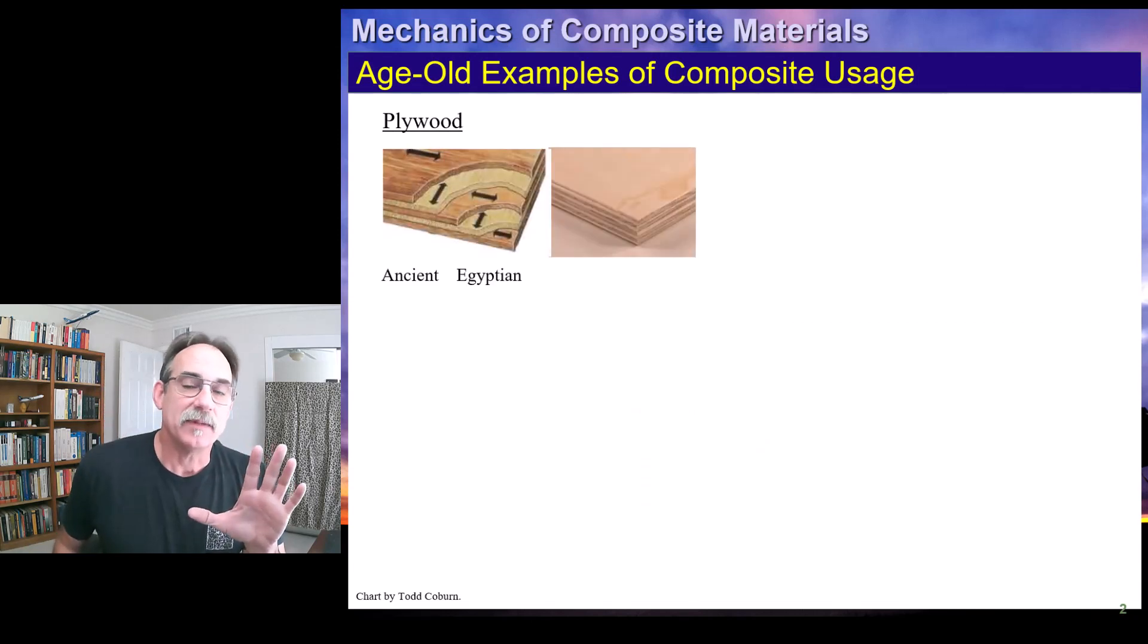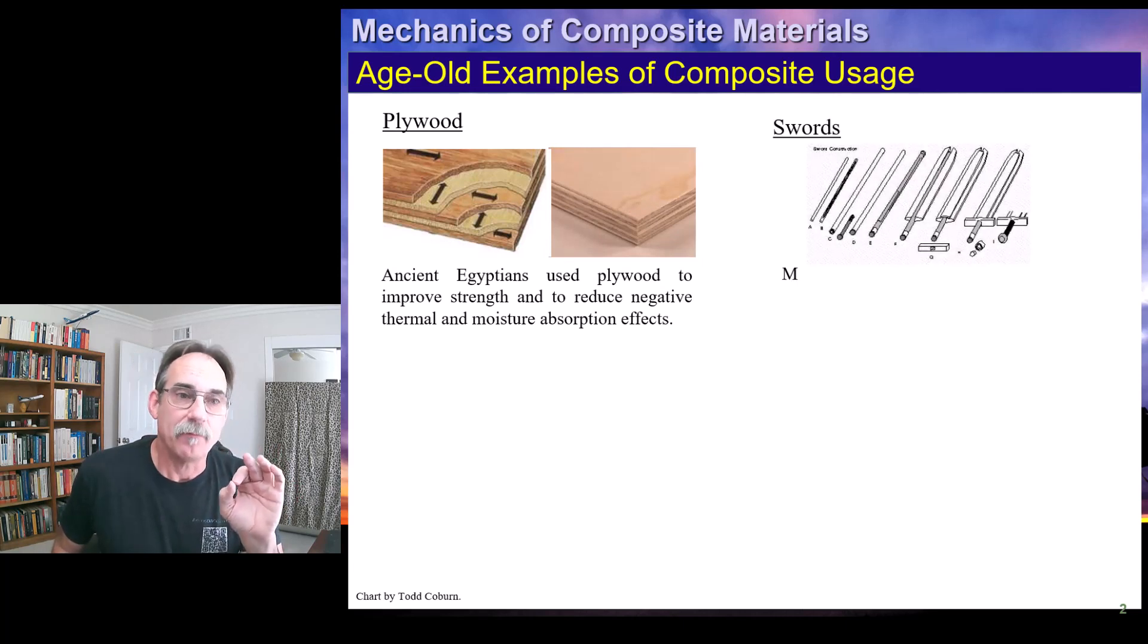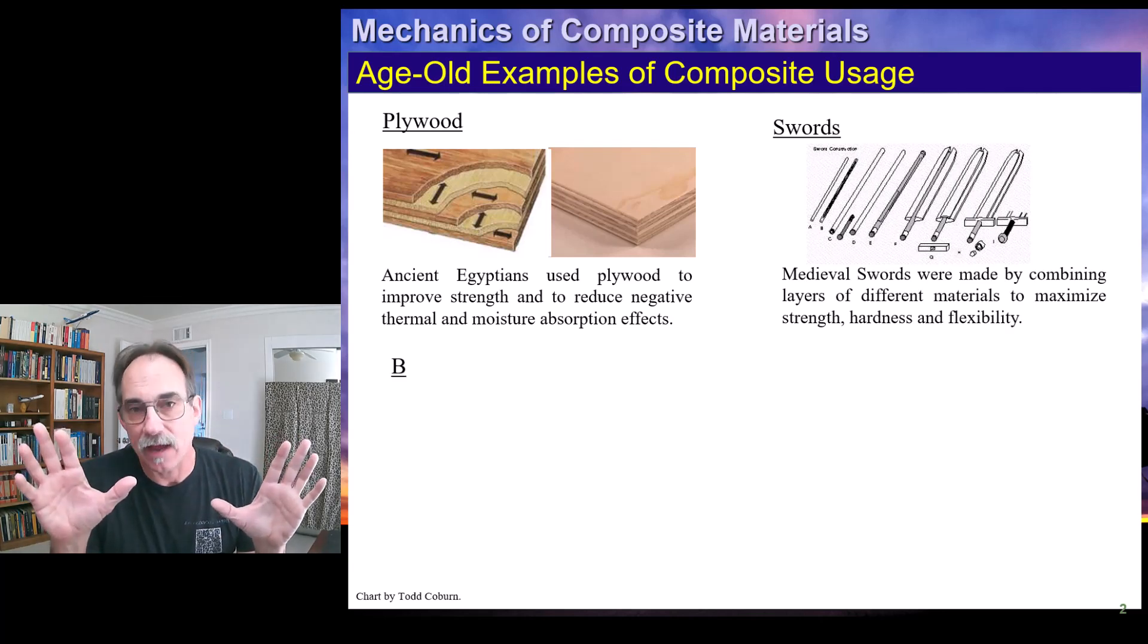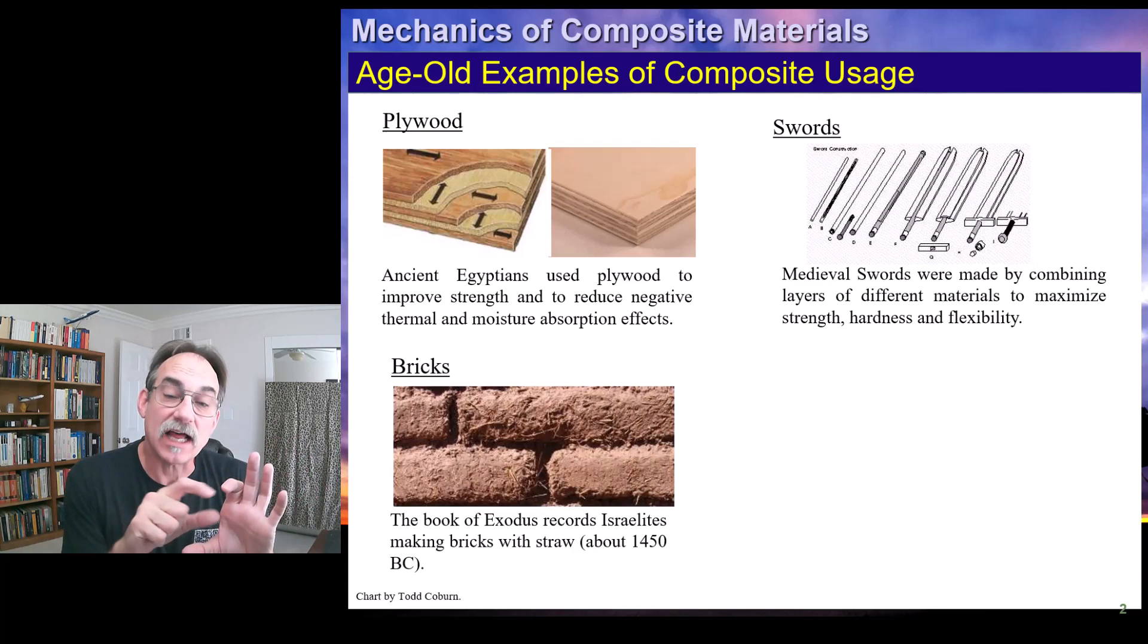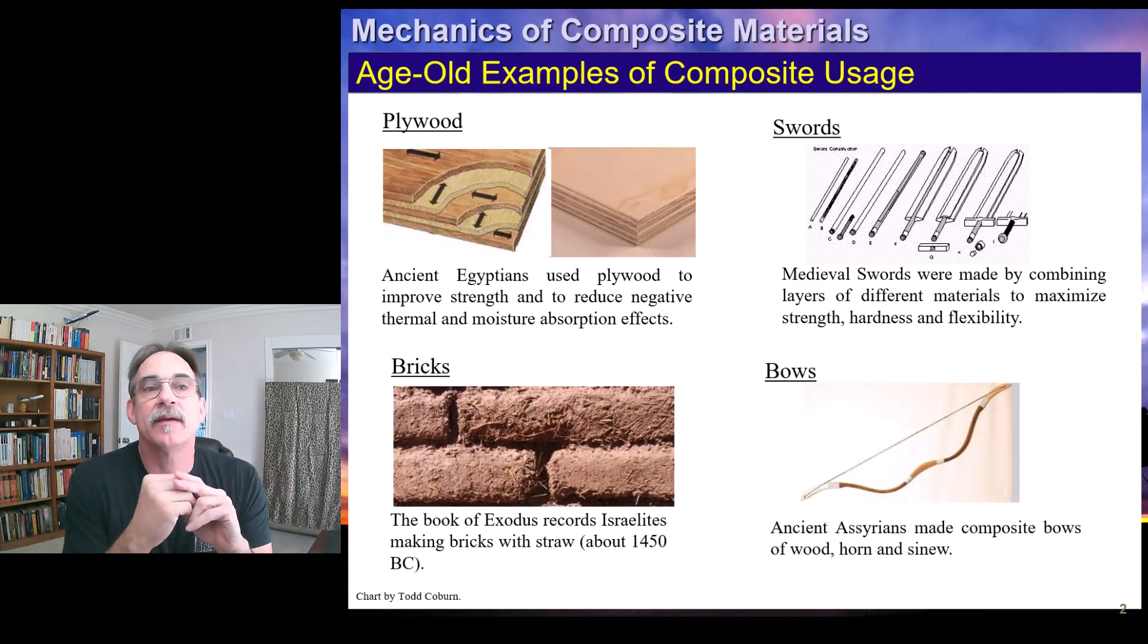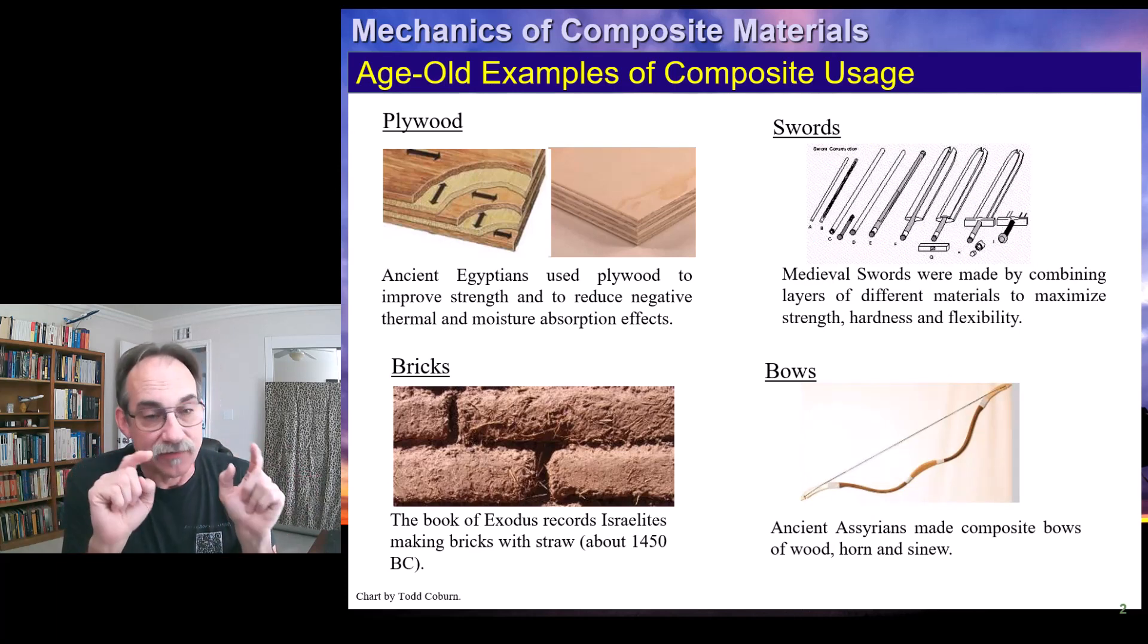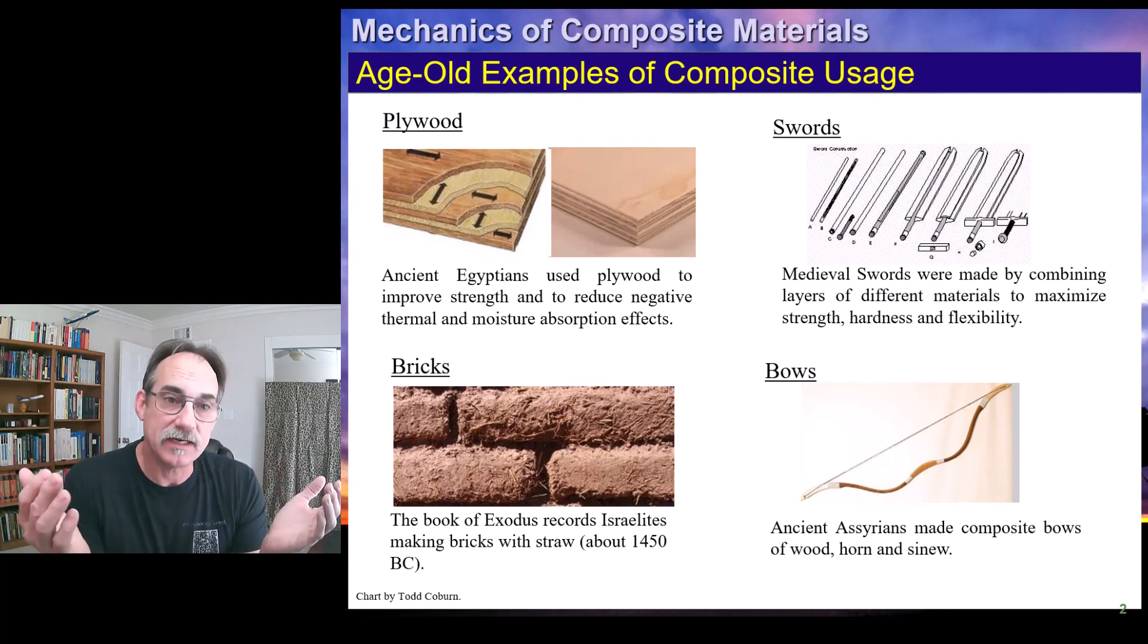So a composite material, actually we need to differentiate. Bruhn uses the word composite to represent multi-flanged members like I-beams and J sections. But when I'm using composite in this course, what we're talking about is a composite of multiple materials.